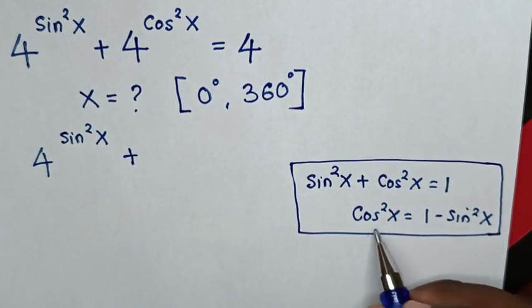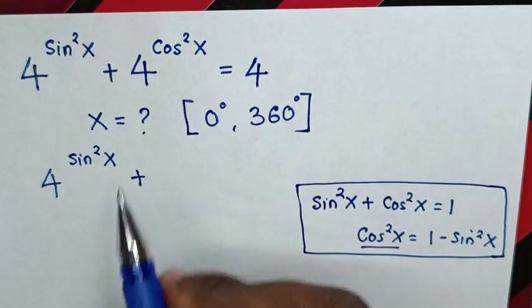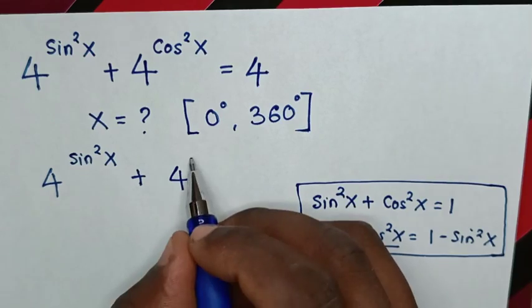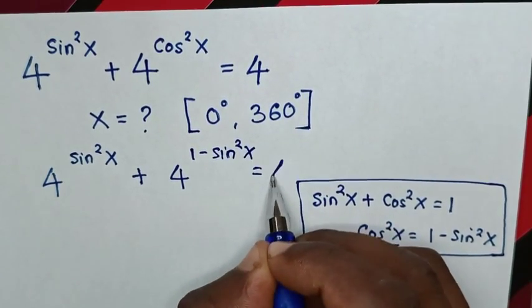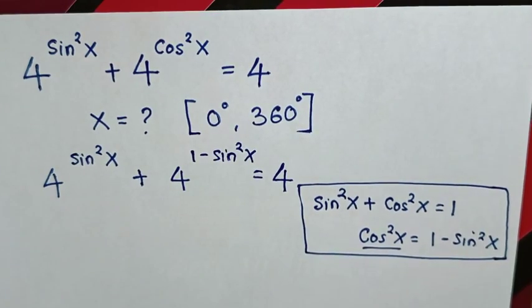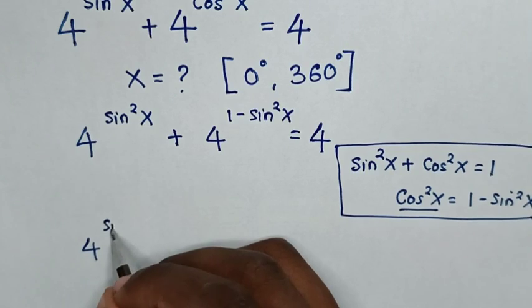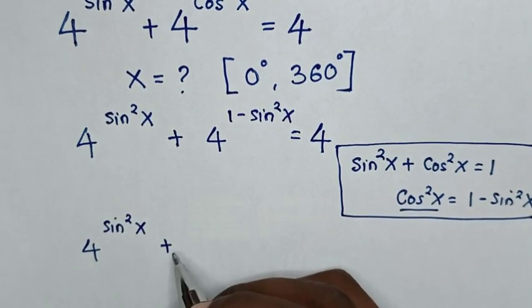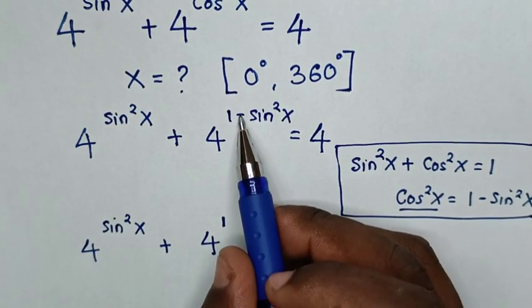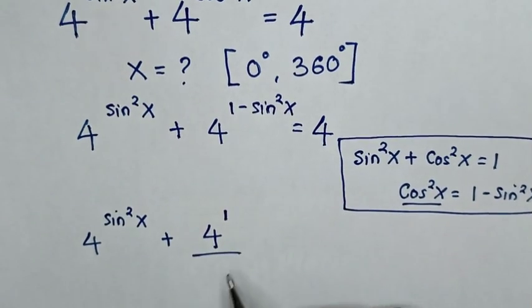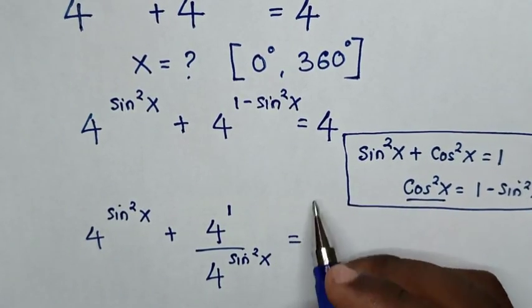Then it will be cos squared x is equal to 1 minus sine squared x. We substitute this value of cos squared x, which is 1 minus sine squared x, into the power, so our equation becomes 4 power of sine squared x plus 4 power of 1 minus sine squared x is equal to 4. Because there is a negative power, that term goes to the denominator.